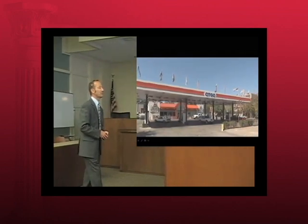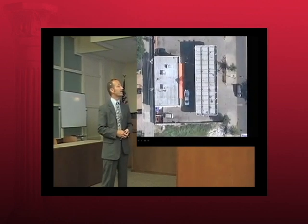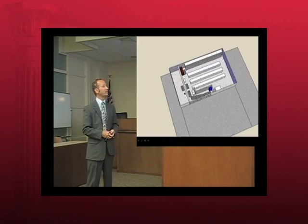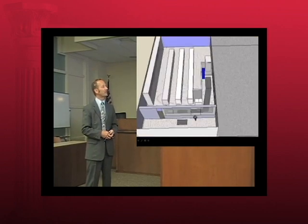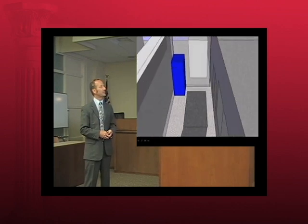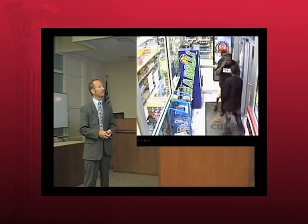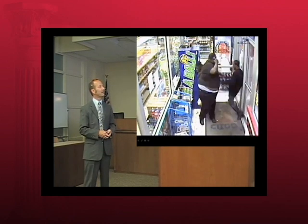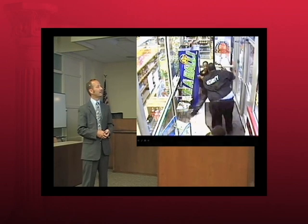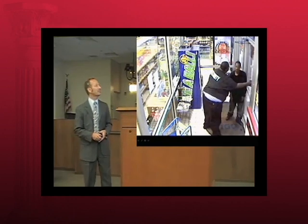You'll see exactly where the stabbing takes place by looking at the three-dimensional diagram. You're going to zoom right into where the camera angle would be picking up the video. There's the front door — zoom in — and there's your footage. The person in the tan shorts is going to get stabbed right there. Now there's no question where inside the gas station this part of the crime took place.